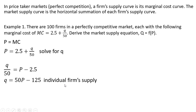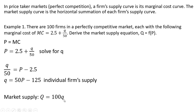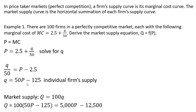Now to get the market supply, recall there are 100 firms in this market, each with this supply. So the market supply will be nothing more than 100 times lowercase q. Substituting in lowercase q, which is 50p minus 125, and simplifying, here is the market supply.